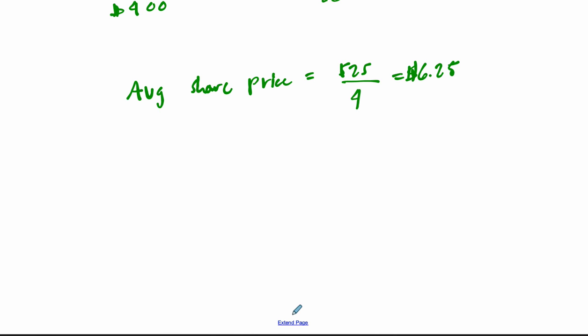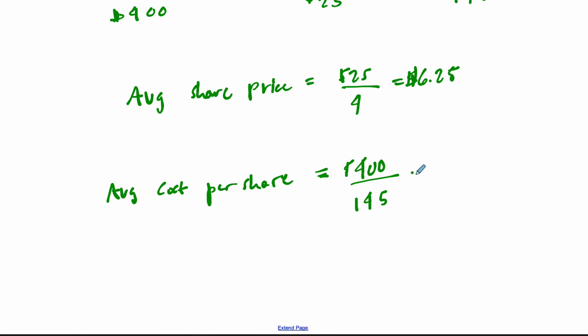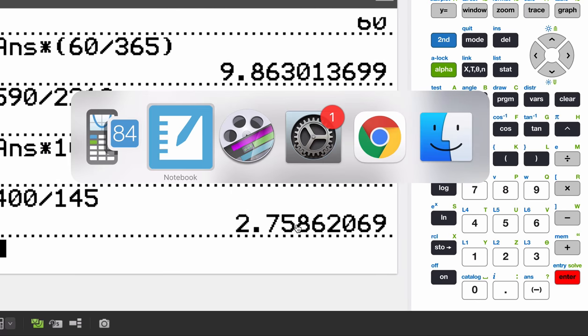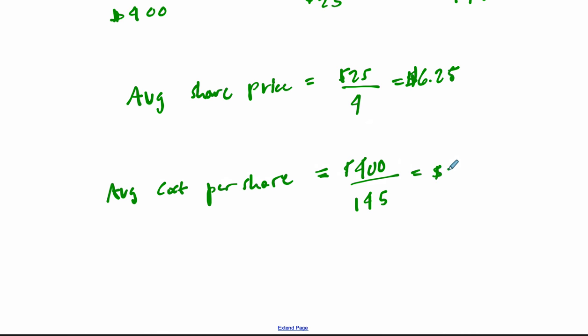Then we look at the average cost per share. We take the $400 that we spent and divide it by the 145 shares we were able to buy. That's quite a lot of shares. $400 divided by 145 gives us $2.76 per share.